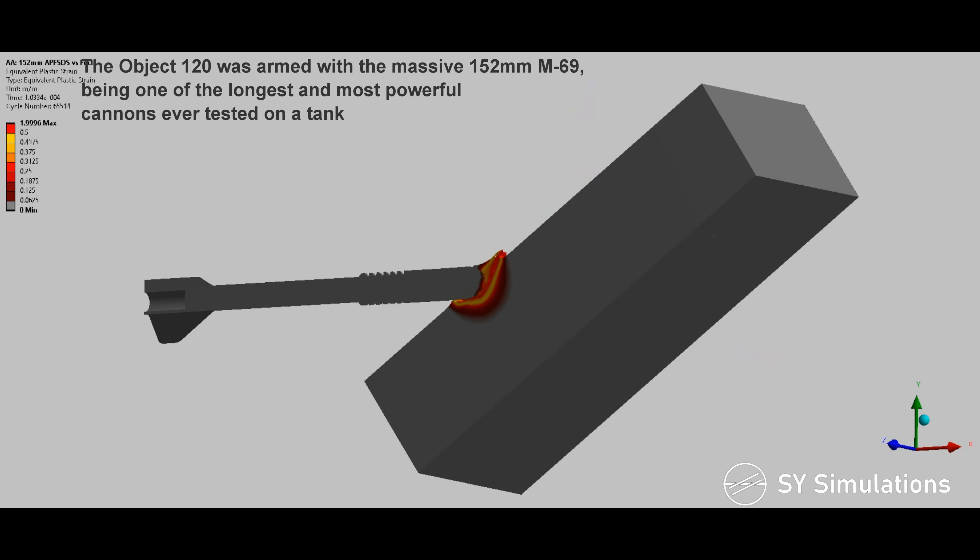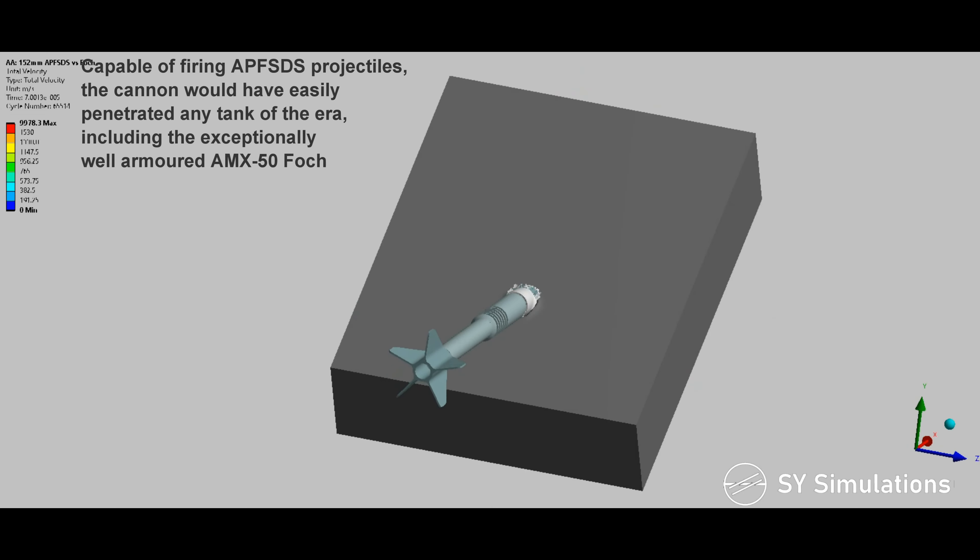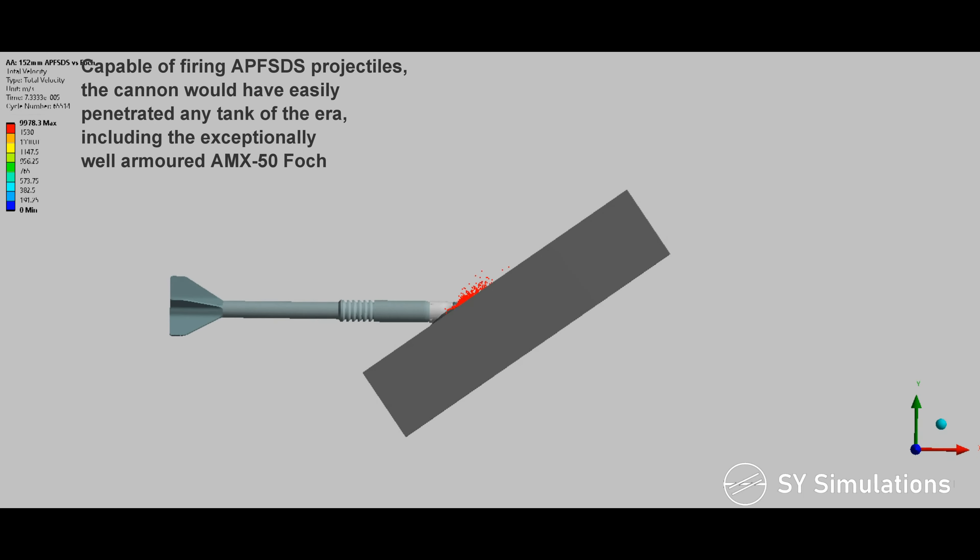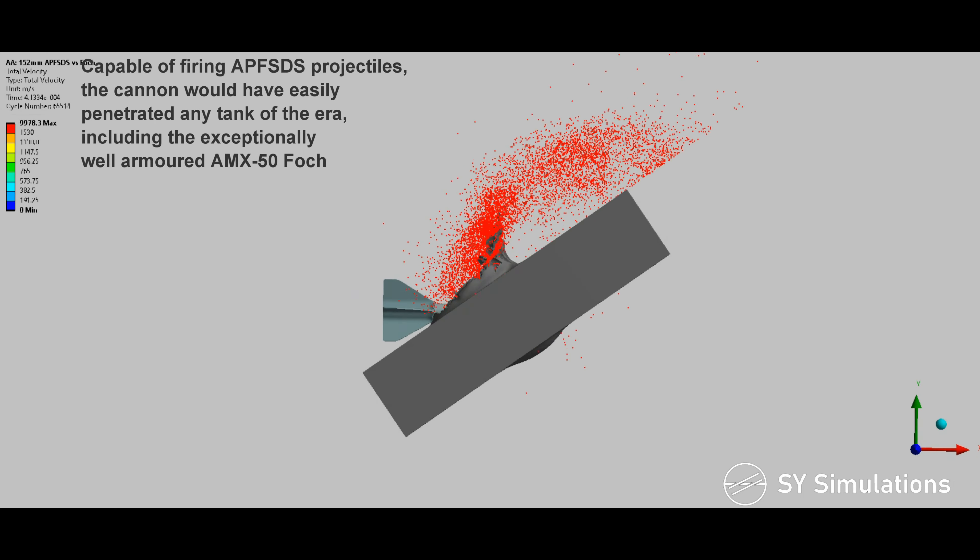The Object 120 was armed with the massive 152mm M-69, being one of the longest and most powerful cannons ever tested on a tank. Capable of firing armor-piercing fin-stabilized discarding sabot projectiles, the cannon would have easily penetrated any tank of the era, including the exceptionally well-armored AMX-50 Foch.